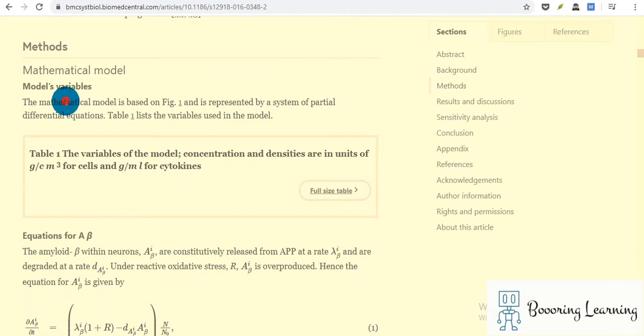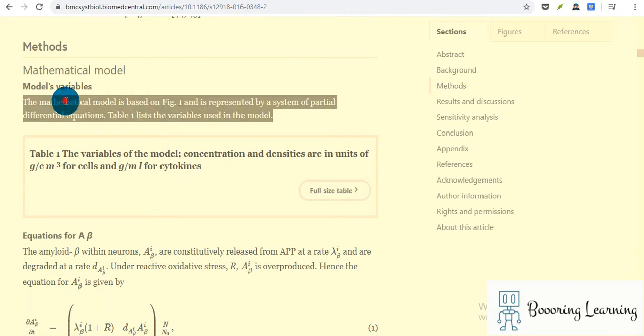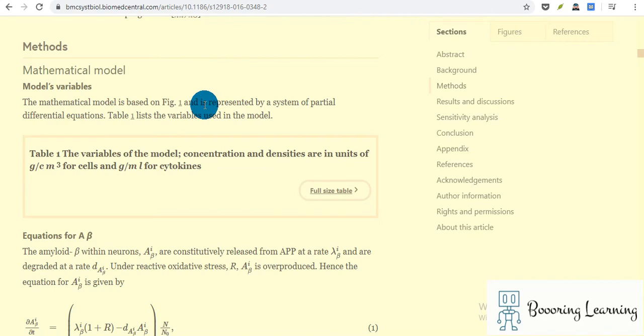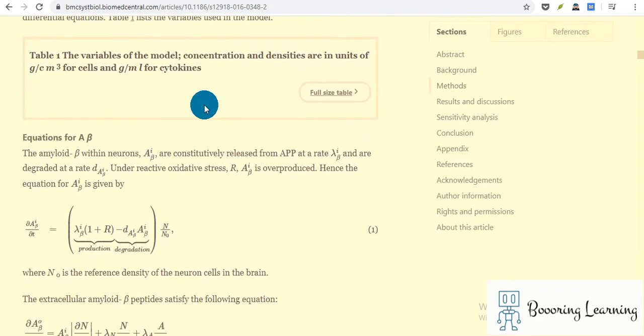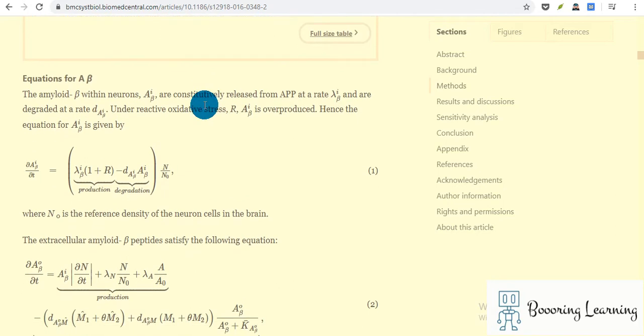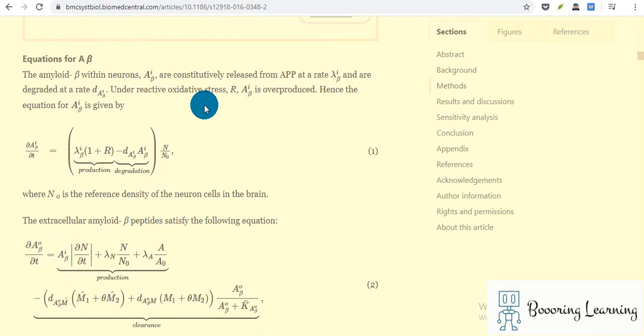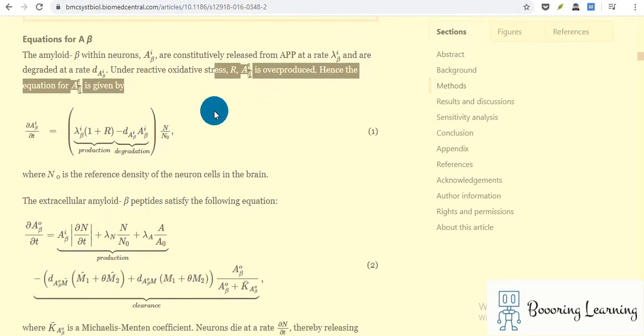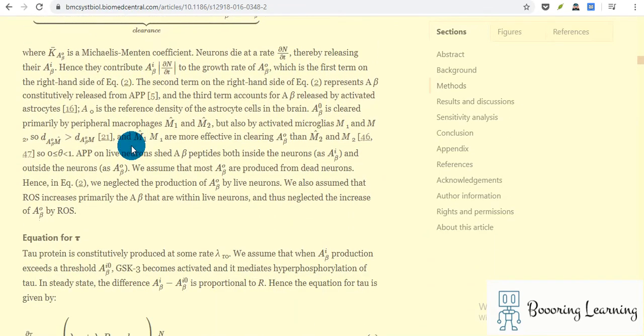Method: the mathematical model is based on Figure 1 and is represented by a system of partial differential equations. I'm not really a mathematician, so I can only show the basics from there. All processes are given by the following equations. They mention the rate of neurons die, thereby releasing their contents, and hence they contribute. There is a growth rate as a variable too.